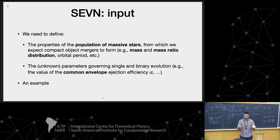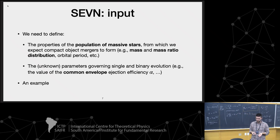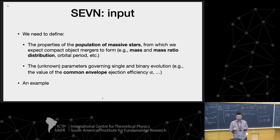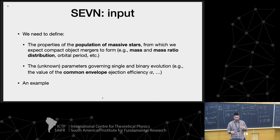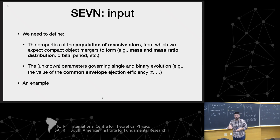When you want to launch a SEVN run, you need to define inputs. You need to define the properties of the population of massive stars — the mass, mass ratio, distribution, orbital period, and metallicity — and the known parameters governing the single and binary evolution, for example the common envelope efficiency. What you need to do is set this initial configuration file.